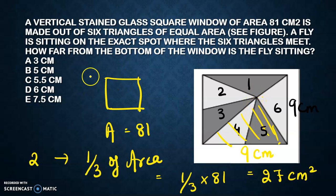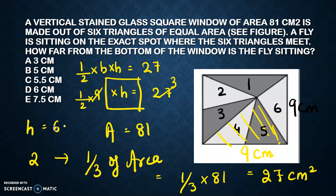I can find the height now. Half times base times height equals my area. Base we already know is 9, so half times 9 times h equals 27. If you cancel 3, then h comes as 6 cm.